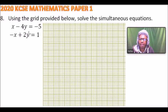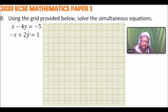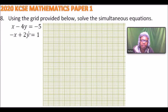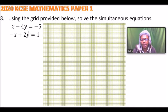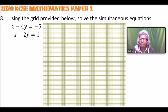This is 2020 KCSE number 8, and it says: using the grid provided below, solve the simultaneous equations. We have x minus 4y equals minus 5, and minus 2x plus 2y equals 1.